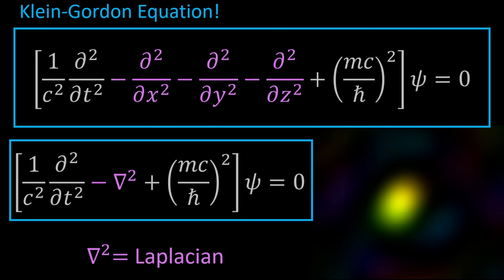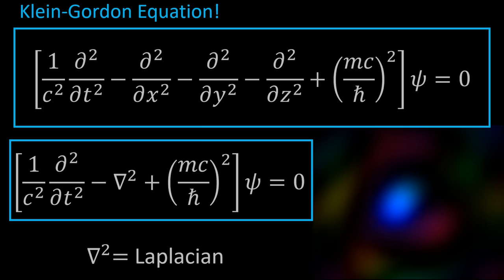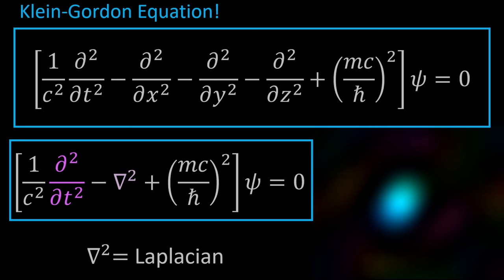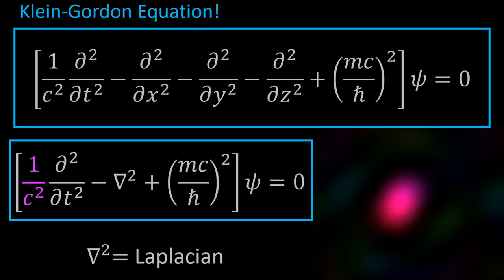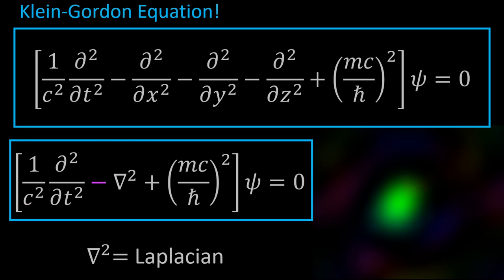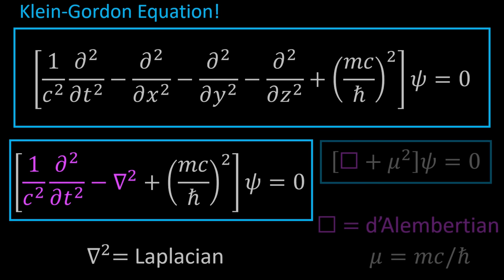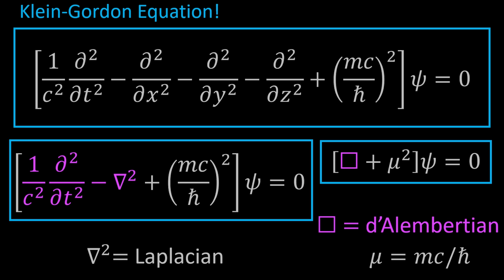We can go one step further. The relativistic operator analogous to the Laplacian would involve a second derivative in time as well as the Laplacian, with a factor of 1/c² on the time derivative to get the units right — to translate time into space — and a minus sign between the time derivative and the Laplacian, reflecting the Minkowski metric. That's exactly what we have on the left side, and it's called the d'Alembertian operator, symbolized by a square. It's like if a triangle had four sides — fitting for four-dimensional relativity.